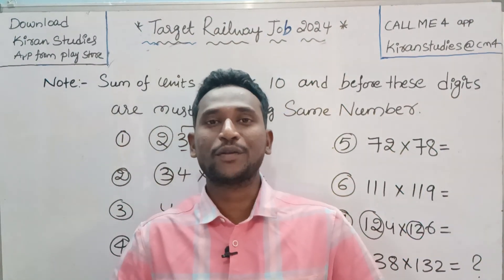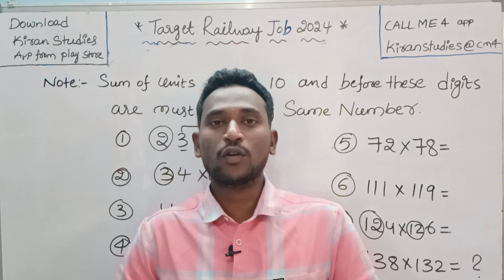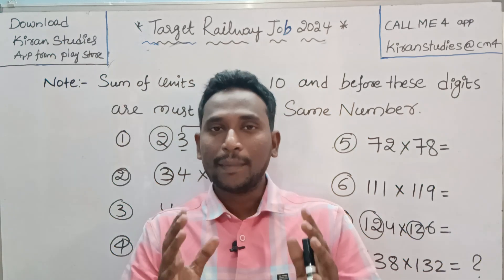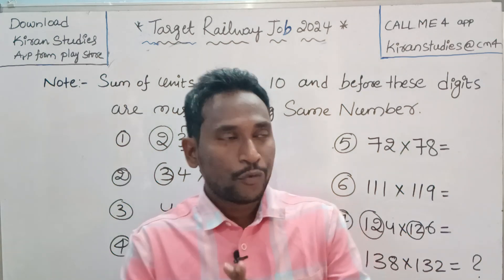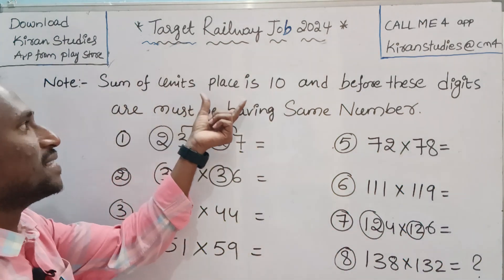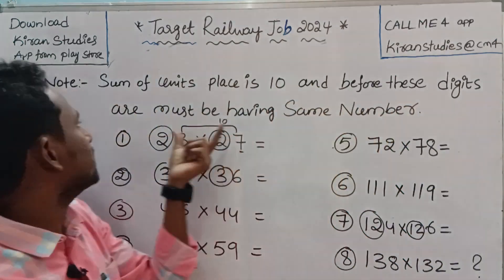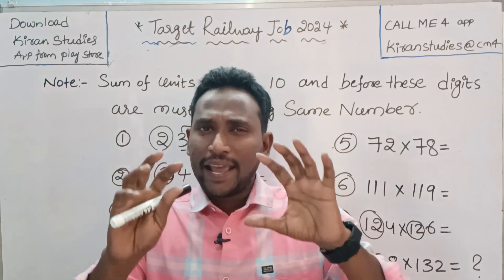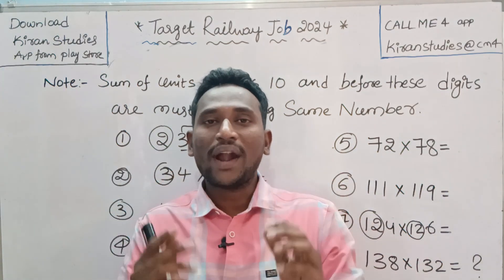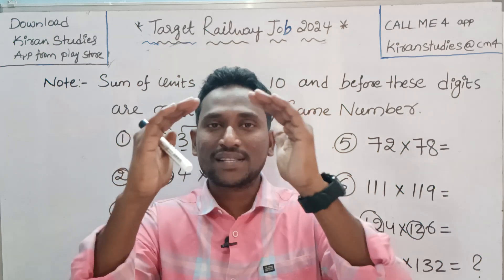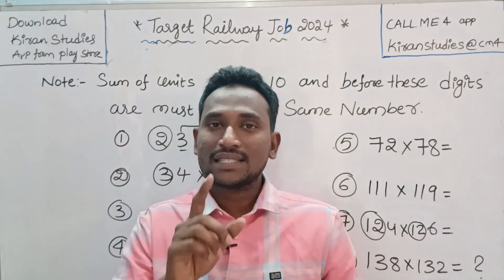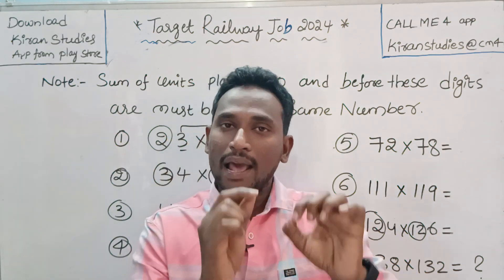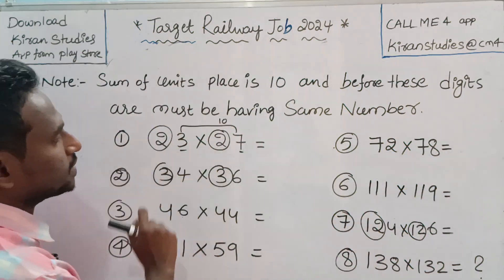Hi everyone, welcome back to Ukraine Studies. Today we are going to discuss a very important rule and logic to crack multiplication of two numbers. Suppose if we are having the sum of unit places equal to 10, and before these digits they must be having the same number. If we multiply these two numbers, we add the unit digits and the same numbers apply.